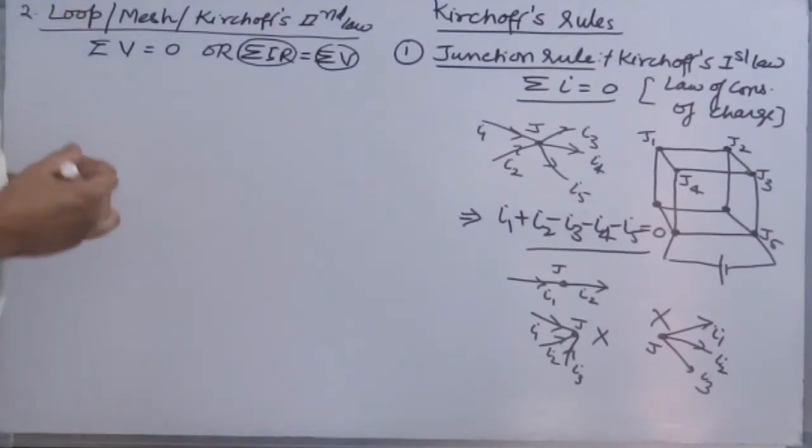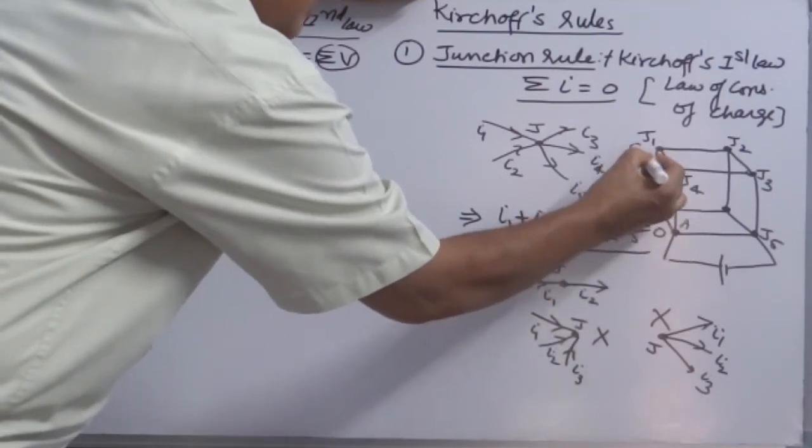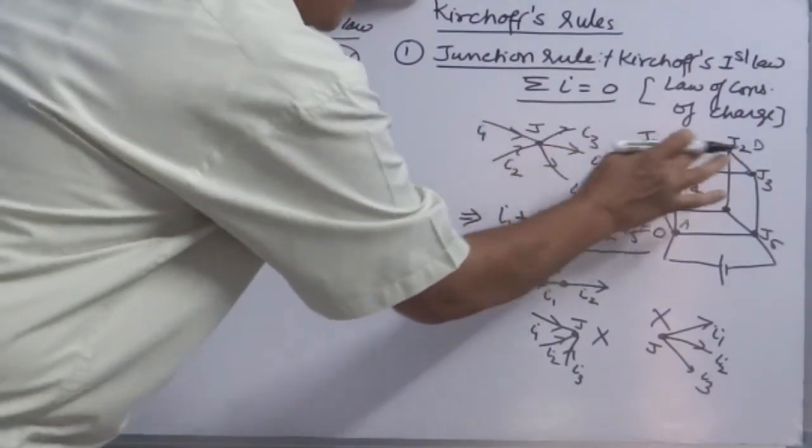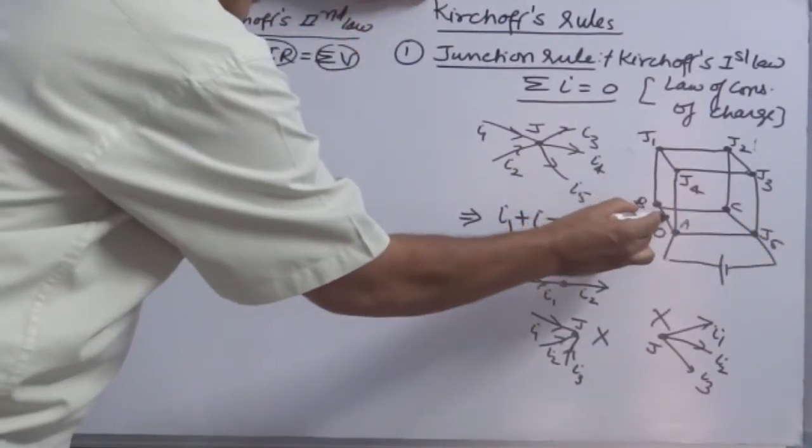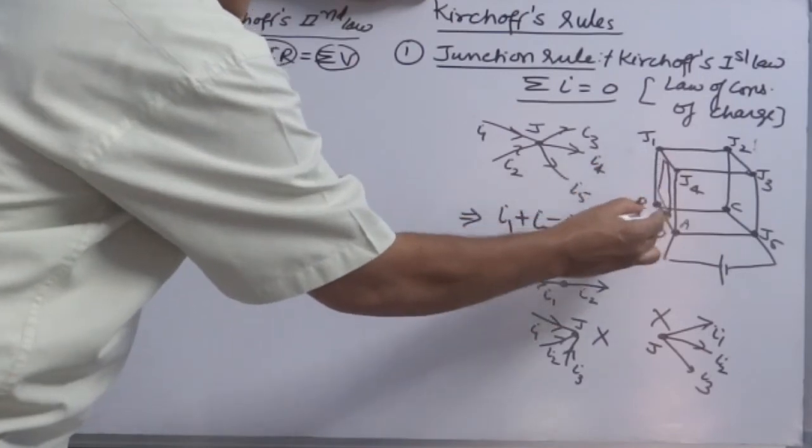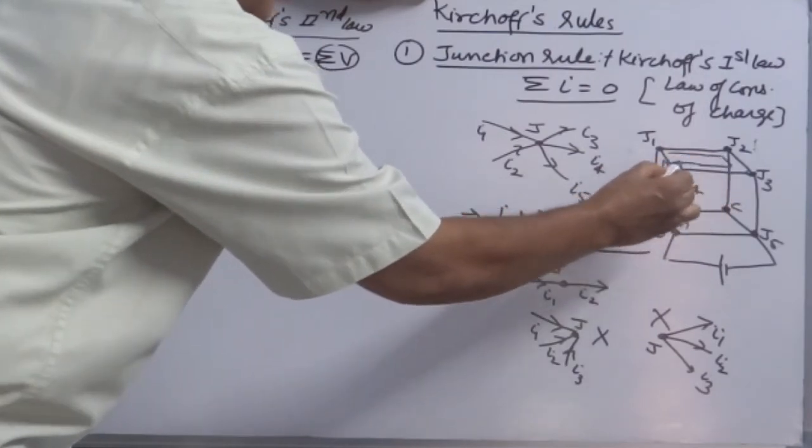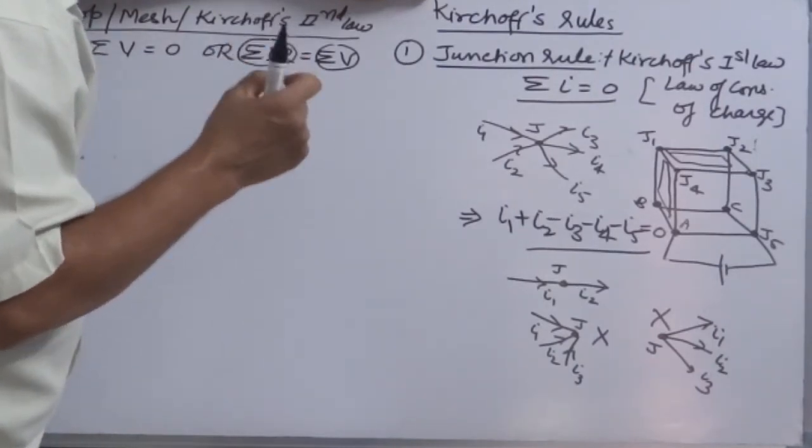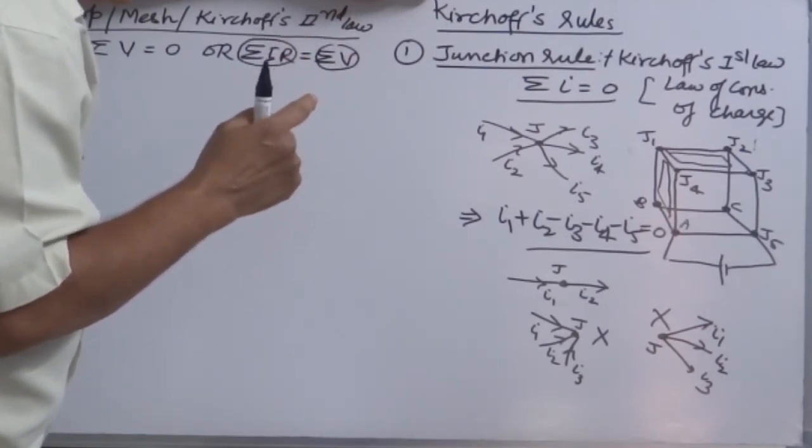What exactly do we mean with closed loop? A closed loop is the path, a closed path in the network. Like this: we can say A, B, J1, J4, E is one loop. Likewise, J1, J2, J3, J4, J1 back to J1 is a second loop. Likewise, you can keep on choosing - each of the surfaces of the cubical structure will be one loop.